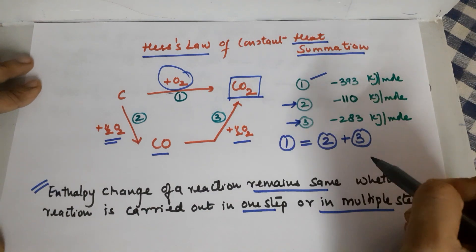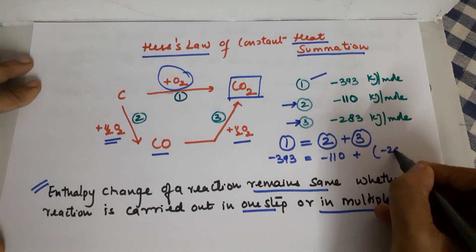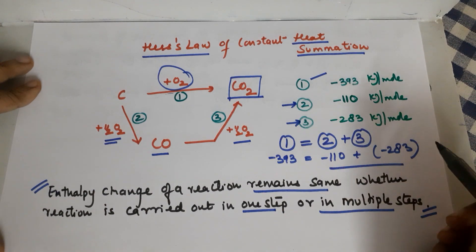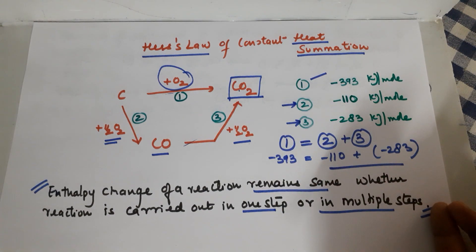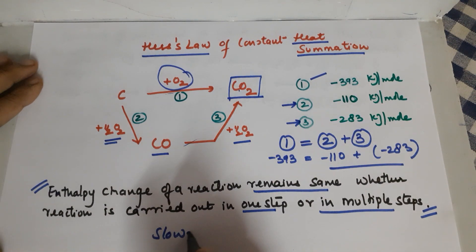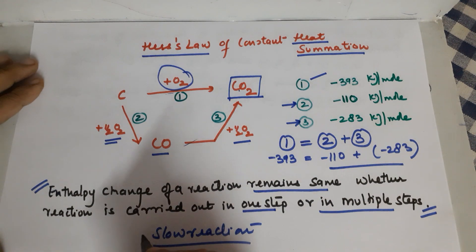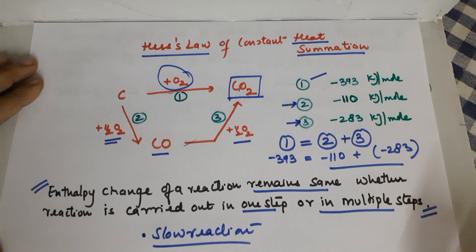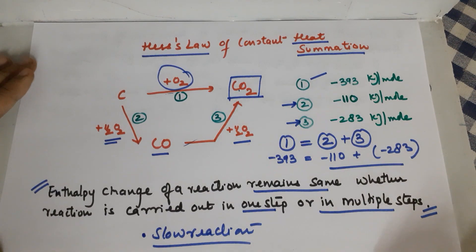Adding these two up, you get the same heat: 393 equals 110 plus 283, which clearly indicates that the total heat of a reaction, whether done in one step or two steps, remains the same. The application of this is: you can use this method to calculate heat for slow reactions, or for reactions which do not take place experimentally, where multiple steps allow you to calculate the enthalpy.